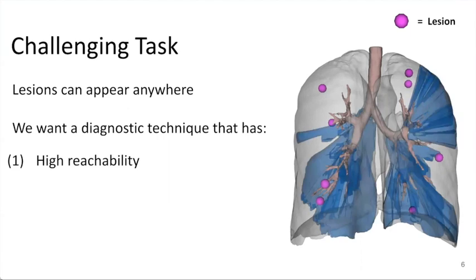The first is reachability, where a technique with high reachability means that we can access a high proportion of the lung. For example, blue regions in the figure on the right are reachable for a given design.